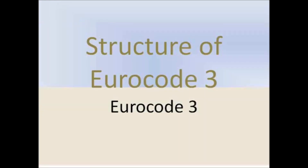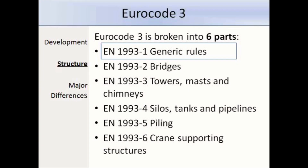I'm going to briefly run through the structure of Eurocode 3. It's broken up into six parts: generic rules, bridges, towers, masts and chimneys, silos, tanks and pipelines, piling and crane supporting structures. The one we are most concerned with for this series of lectures is EN 1993 Part 1, which covers generic rules. If you want to design a bridge, you would need 1993 Part 2, but Part 2 only contains supplementary rules for bridges — therefore you will also need to refer to Part 1. Likewise, if you were designing a tower you would need Part 3, but you would also need to keep referring back to Part 1. So 1993 Part 1 is the one we will be using most often.